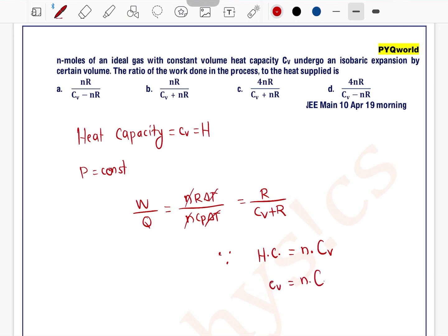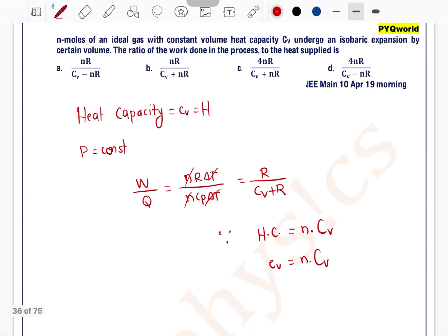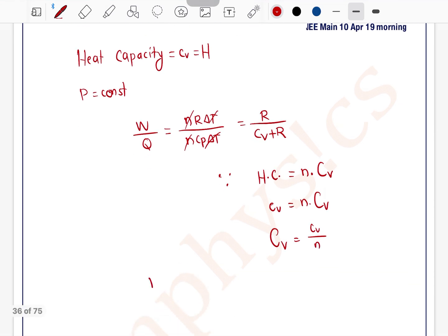Capital Cv equals heat capacity Cv divided by N. If we put this in the formula, W by Q equals R divided by heat capacity divided by N plus R.